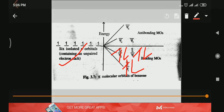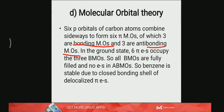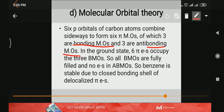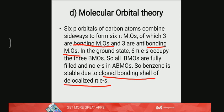So according to MOT, benzene is stable because of the closed bonding shell of delocalized pi electrons. Or we can say benzene is stable because all the bonding MOs are completely filled and there is no electron in the anti-bonding orbital. That is called the aromatic sextet in the case of benzene.